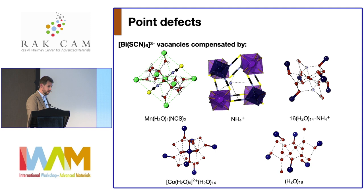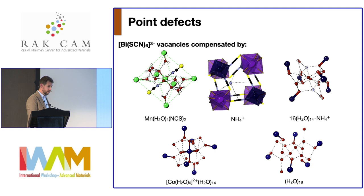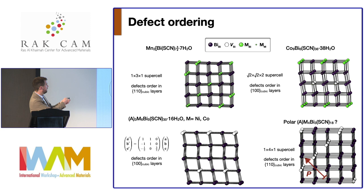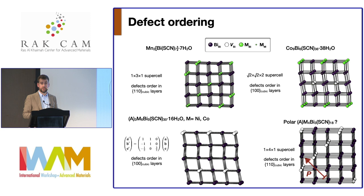These vacancies also order in complex patterns with pretty large unit cells. Importantly, if you order these in the right way you can generate polarity — a hypothetical ordering closely related to an experimental one but with a repeat of four instead of three would be polar. So again, this is another way of realizing function through the additional degrees of freedom you get in molecules.